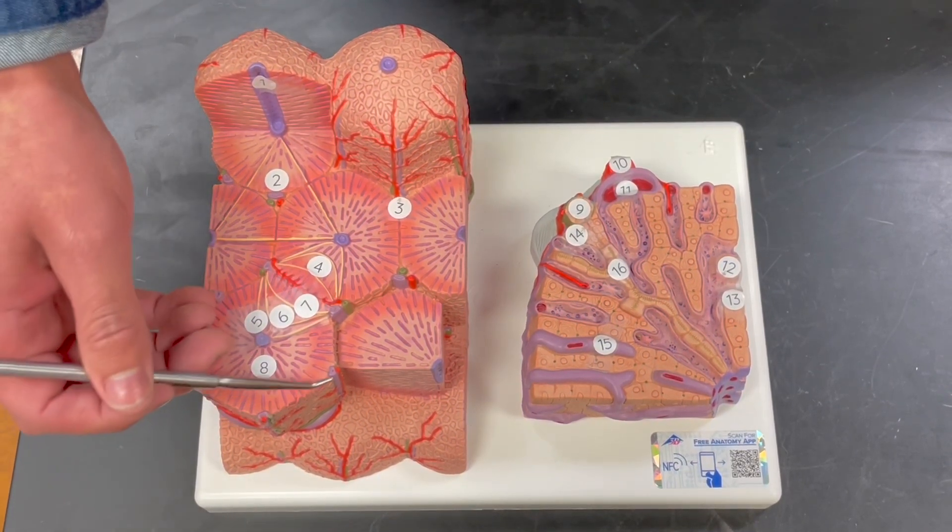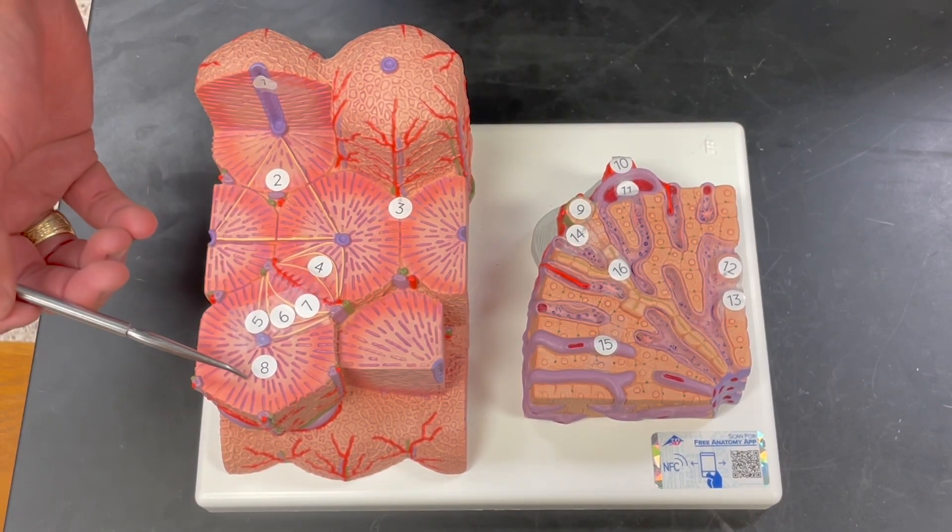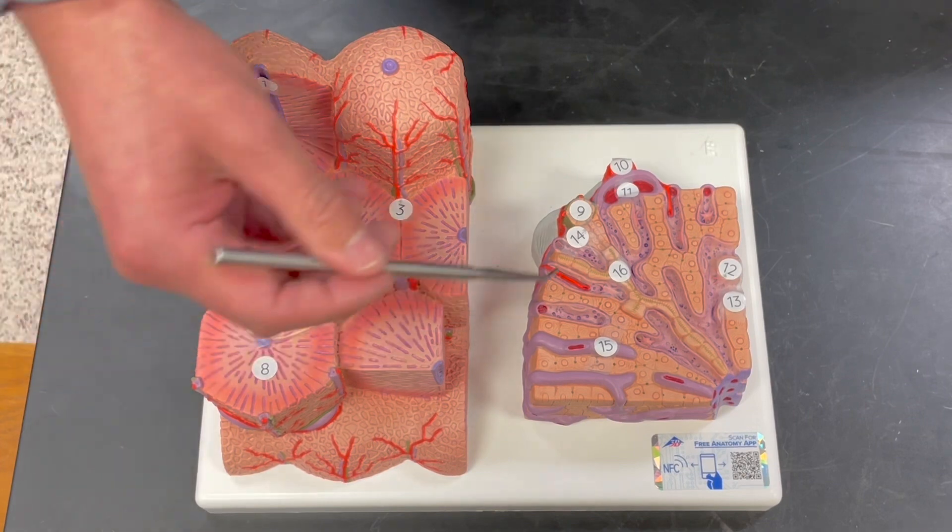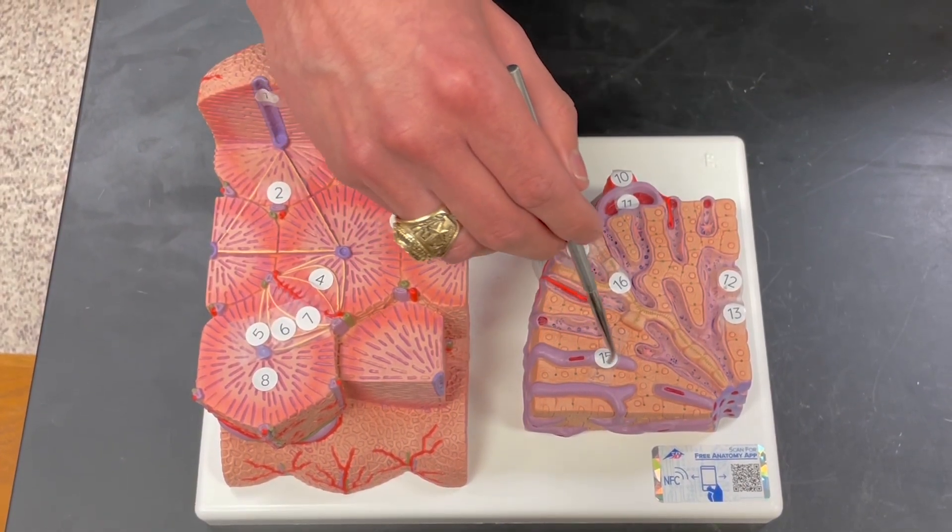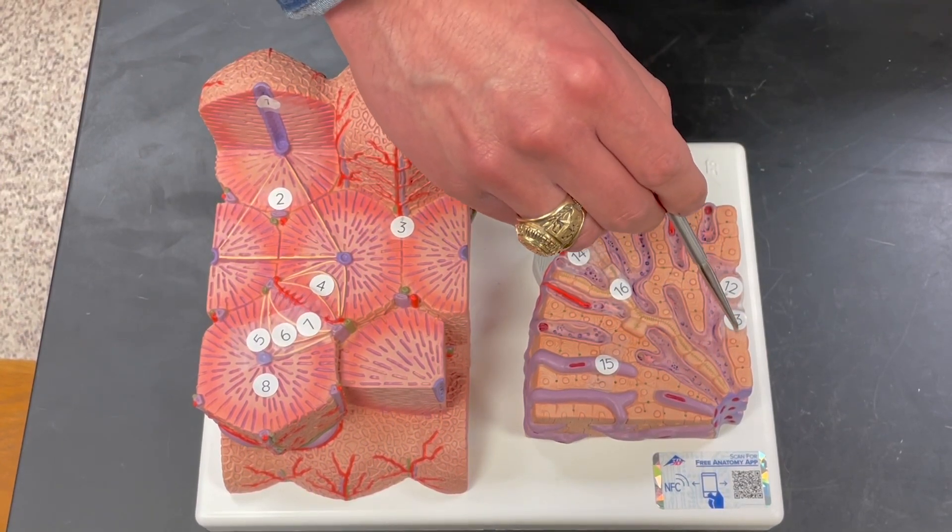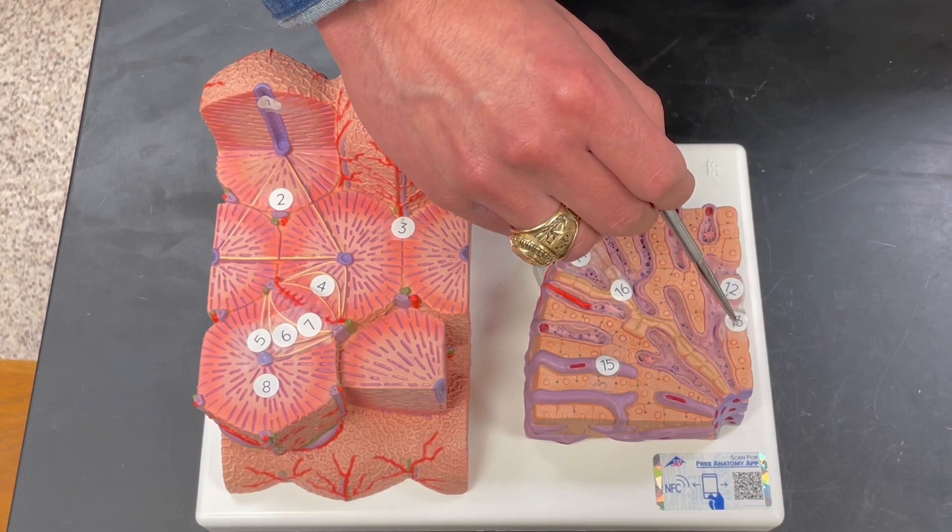Working our way over, this is the liver sinusoid, that's number 15. Then you also have the individual hepatocytes, so that's what I labeled 13. All of these are the individual hepatocytes.